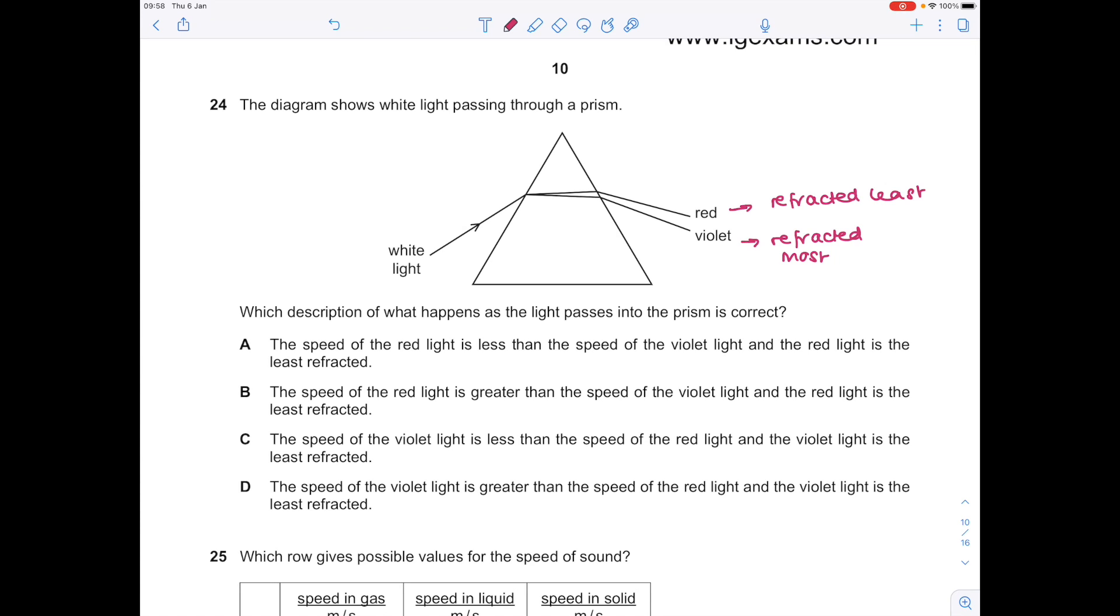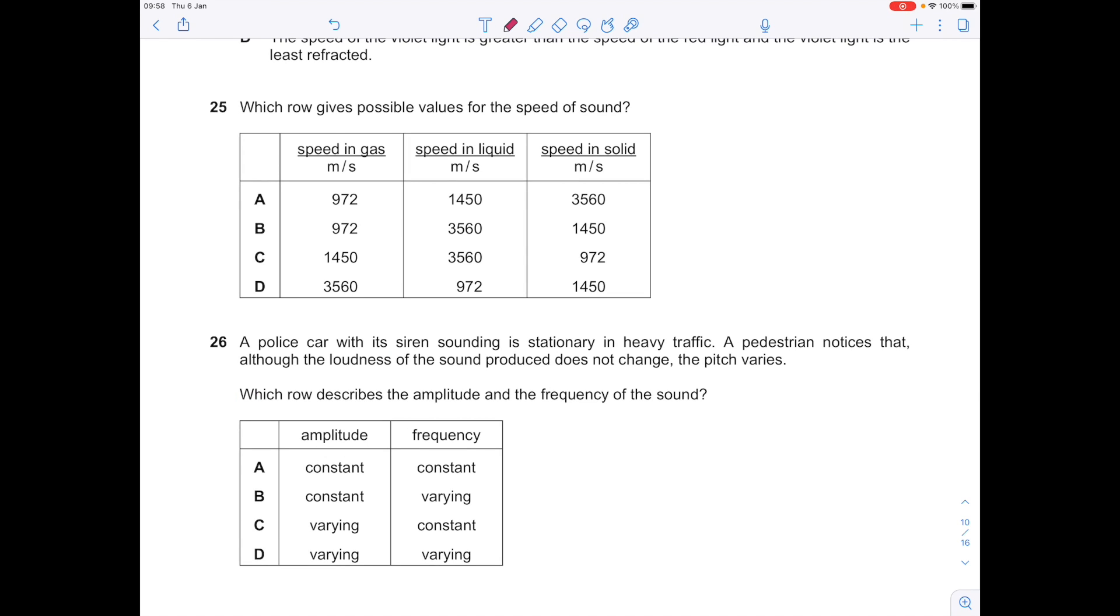This therefore means in terms of changes in speed, the violet one has slowed down the most. So let's see what the options are. The speed of the red light is less than the speed of the violet light? Nope. The speed of the red light is greater than the speed of the violet light and the red is the least refracted? Yes, that's what I've just said.